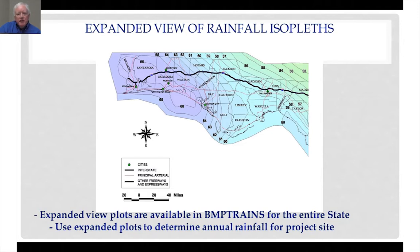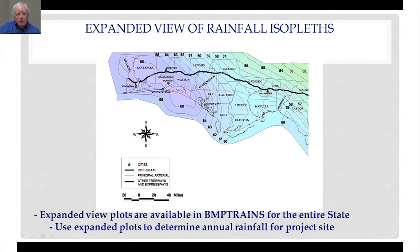For example, if you were conducting a project in Liberty County, in maybe the central portion of Liberty County, you would be located between rainfall isopleths of 61 and 60 inches. You could then iterate a more specific rainfall value by knowing your specific project location.